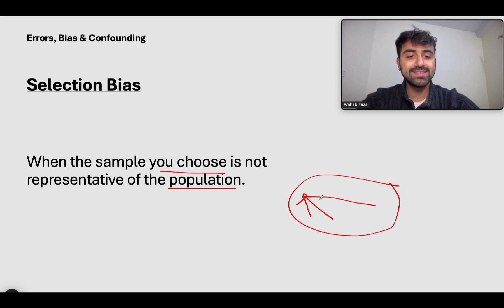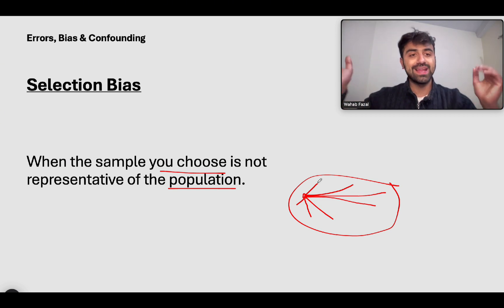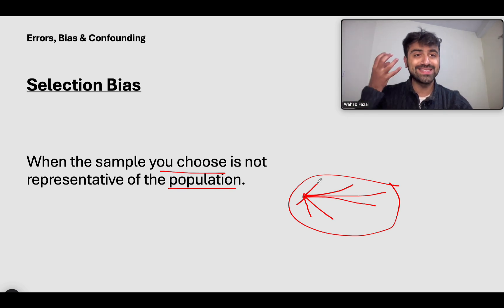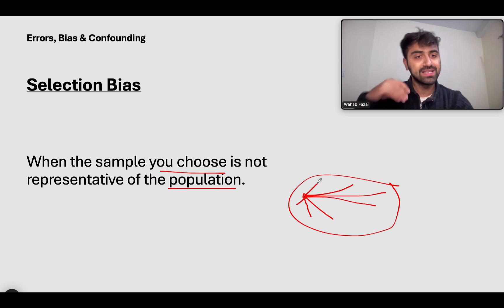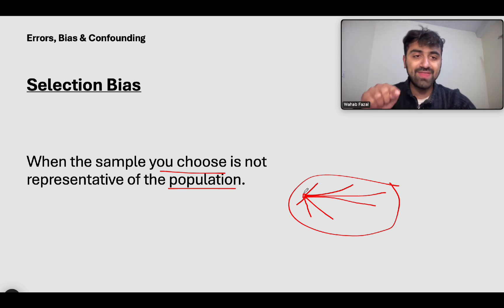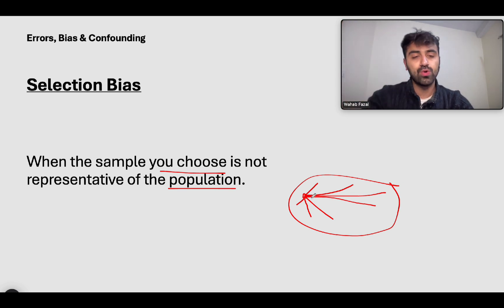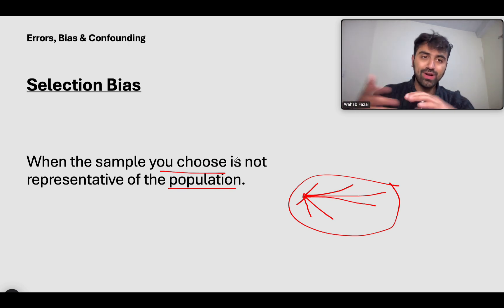This sample essentially represents your entire population, because what you want to do is make conclusions about the entire population. For example, if you want to make the conclusion that Asian people are very smart, you take a small sample of people. You try to make sure that this sample is as similar to the Asian population as much as you can, and then you check on that sample if Asian people are smart — maybe through IQ or aptitude tests. So selection bias is when the sample of people that you choose is not exactly like the population.